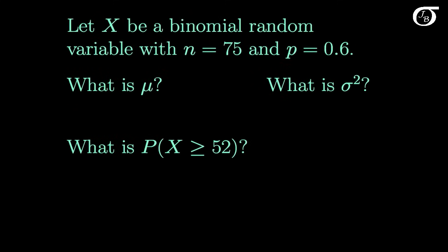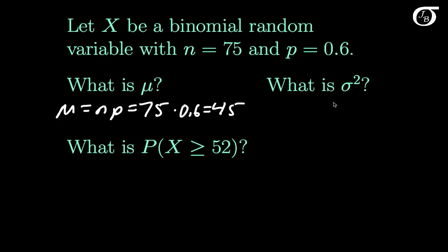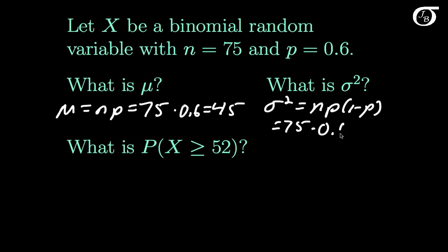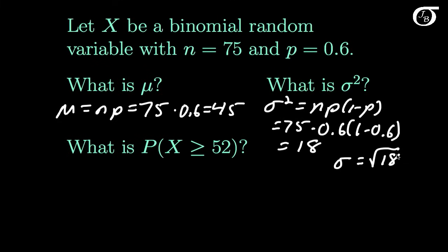Let x be a binomial random variable with n=75 and P=0.6. Then μ = nP = 75 × 0.6 = 45, and σ² = nP(1−P) = 75 × 0.6 × 0.4 = 18, so the standard deviation is √18. Now suppose we wanted to use the normal approximation to estimate a probability. We could calculate the exact probability from the binomial using a computer, but we'll use the normal approximation here.